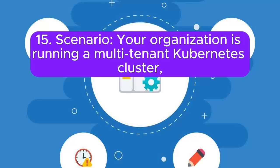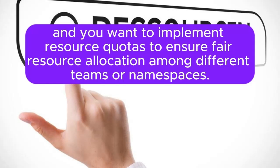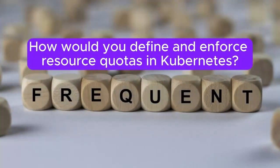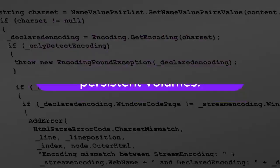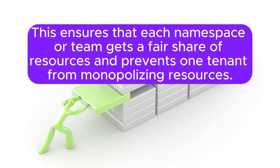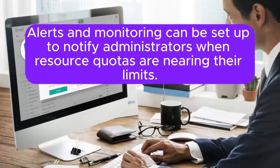Scenario 15: Your organization is running a multi-tenant Kubernetes cluster, and you want to implement resource quotas to ensure fair resource allocation among different teams or namespaces. How would you define and enforce resource quotas in Kubernetes? Answer: I will define resource quotas for each namespace, specifying limits for resources like CPU, memory, and persistent volumes. This ensures that each namespace or team gets a fair share of resources and prevents one tenant from monopolizing resources. Alerts and monitoring can be set up to notify administrators when resource quotas are nearing their limits.